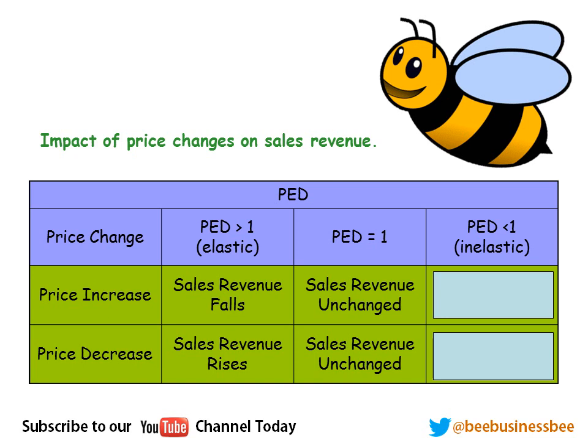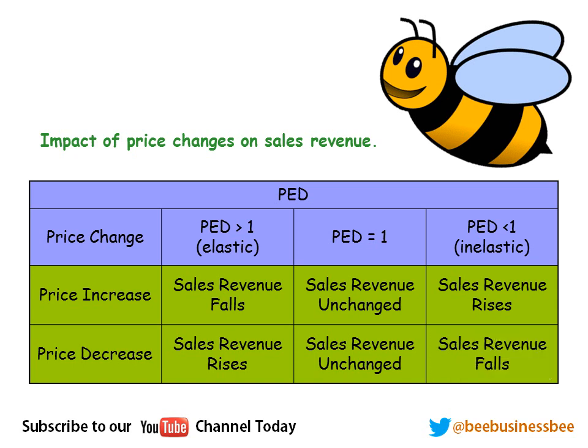For an inelastic product — less responsive — if we increase our price, sales revenue will go up. Because if we increase our price by 10%, we'll only lose maybe 5% of our customers, meaning we make more money. If we lower the price of an inelastic product, sales revenue will fall, because we'll only gain maybe 2–3% more customers. That table is really important to remember.